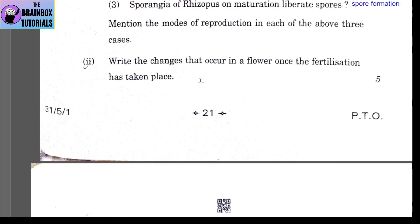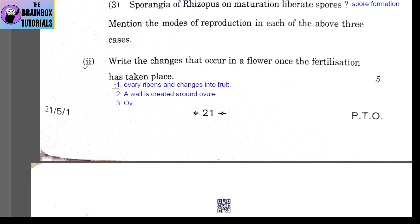Part B, Number 2: write the changes that occur in a flower once fertilization has taken place. (1) The ovary ripens and changes into a fruit. (2) A wall is created around the ovule. (3) The ovule is converted into a seed, and the wall around it becomes the seed coat.